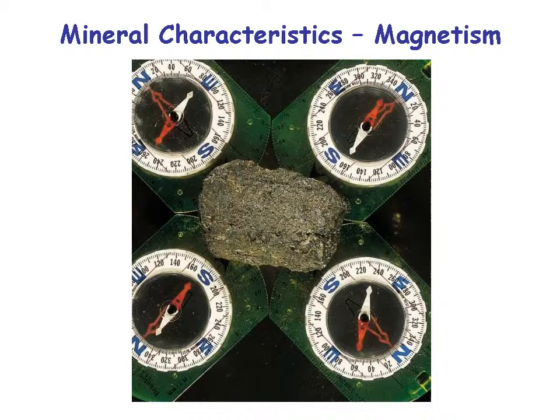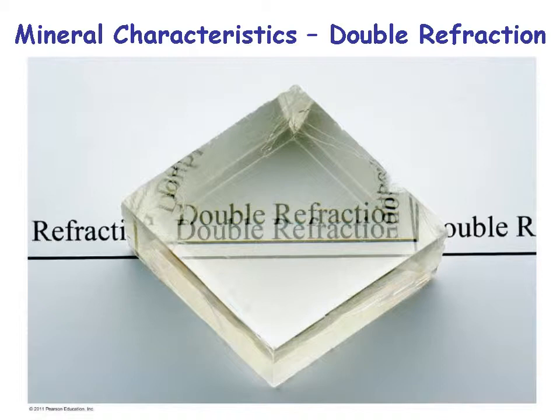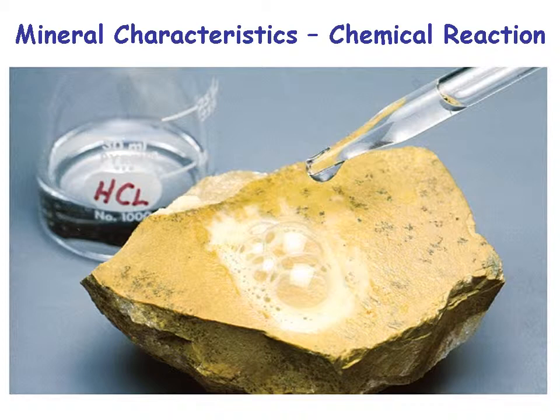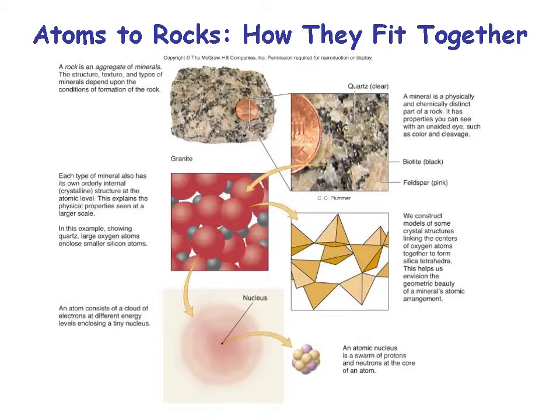Magnetite affects magnets on all sides of it. Transparent calcite shows double refraction — placing the calcite mineral over words shows two images. Here's a piece of limestone made of mineral calcite: put hydrochloric acid on it and it fizzes. You can carry a little hydrochloric acid in the field so when you're looking at a road cut, you can tell what's limestone and what's not.